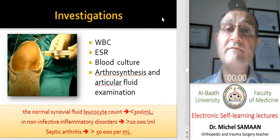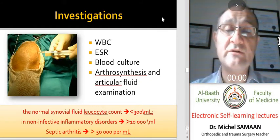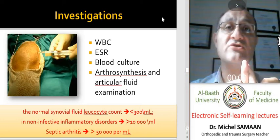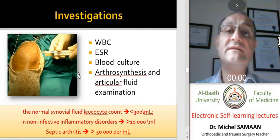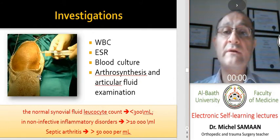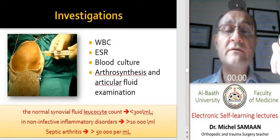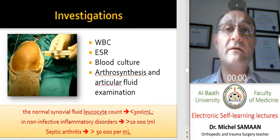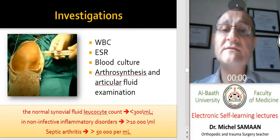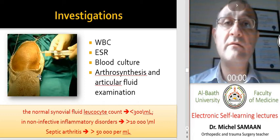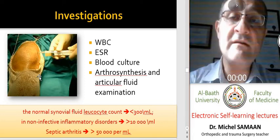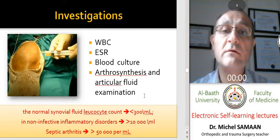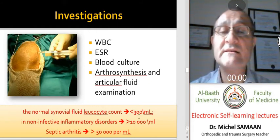The most important investigation tool is joint aspiration. During joint aspiration we do two things: direct examination and culture. We investigate white blood cells in the joint fluid. We note the color and whether the fluid is clear, turbid, or hemorrhagic. In laboratory study, we assess the white blood cell count, sugar level, and protein level. In normal joints, there are fewer than 300 white blood cells per milliliter.